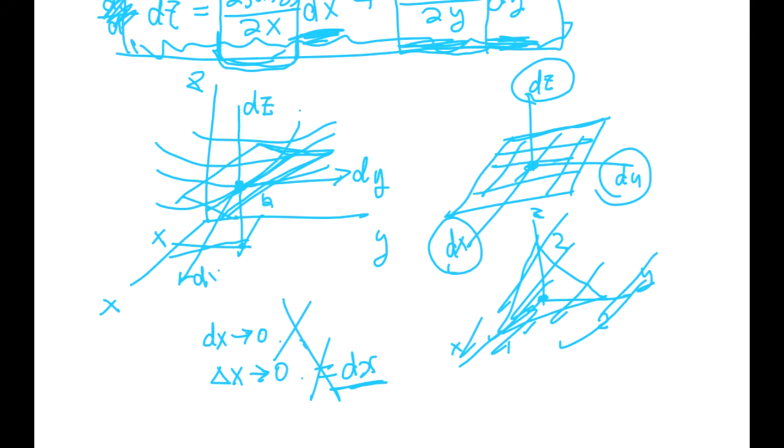Which is touching this original function z equals f(x,y). Okay, so this equation dx, dy, and dz, the linear plane equation, is a derivative function of z equals f(x,y). So now it's very clear. What is dx? What is dy? What is dz?